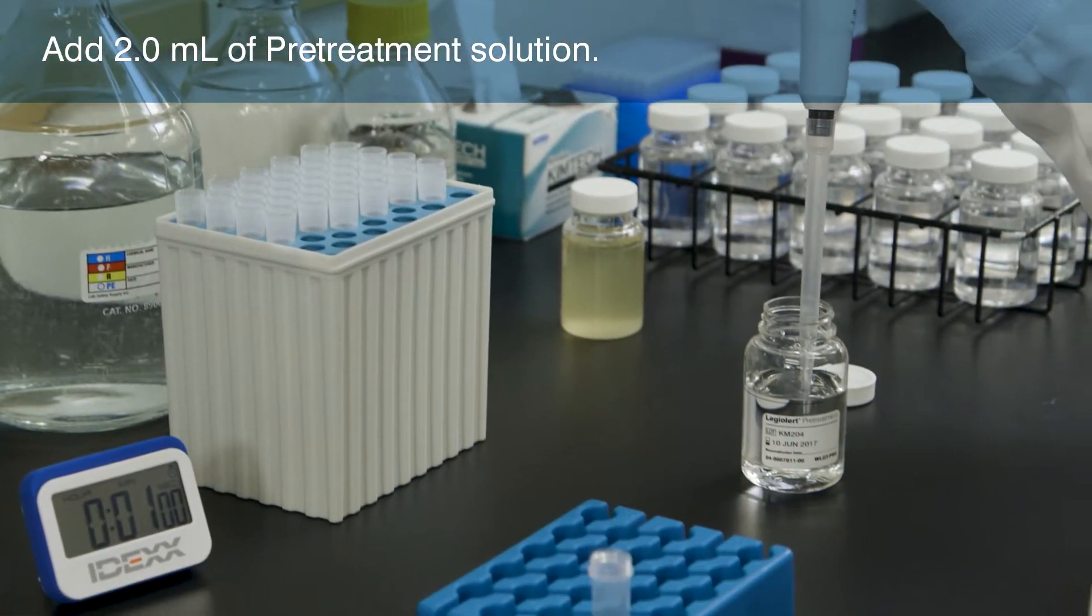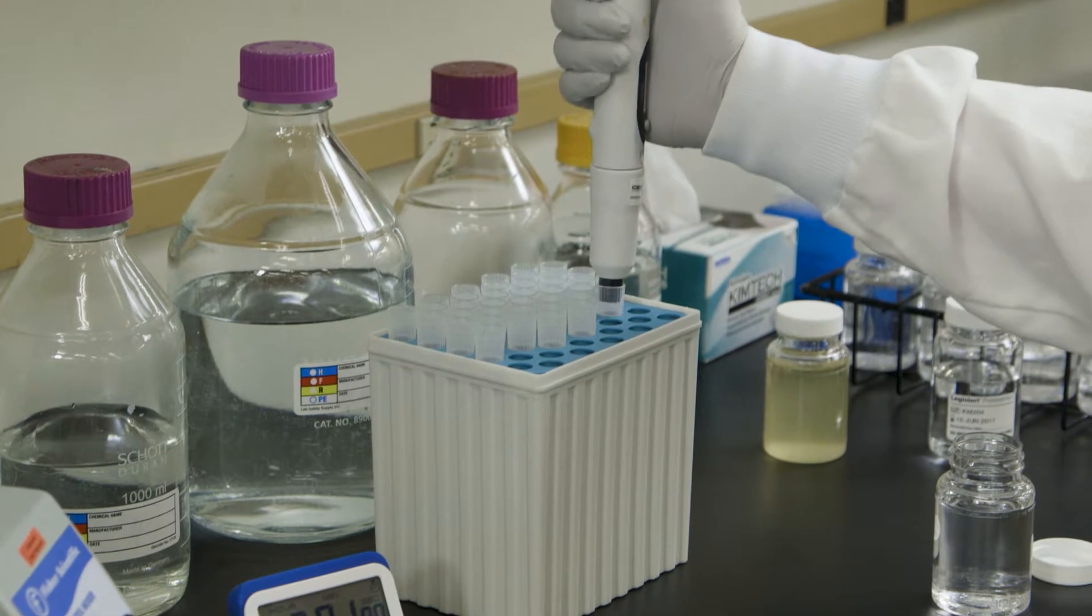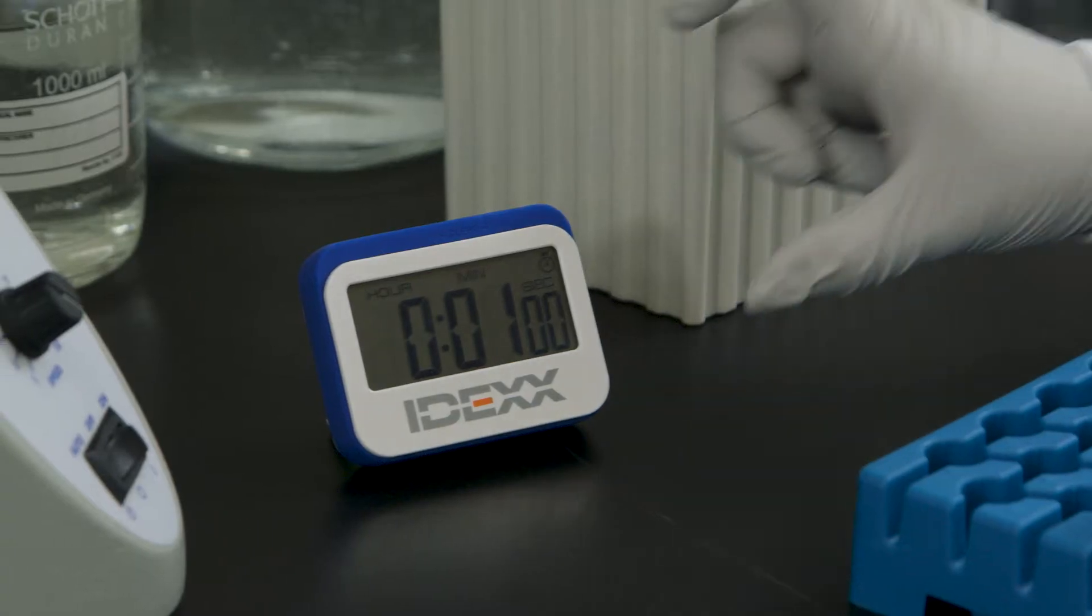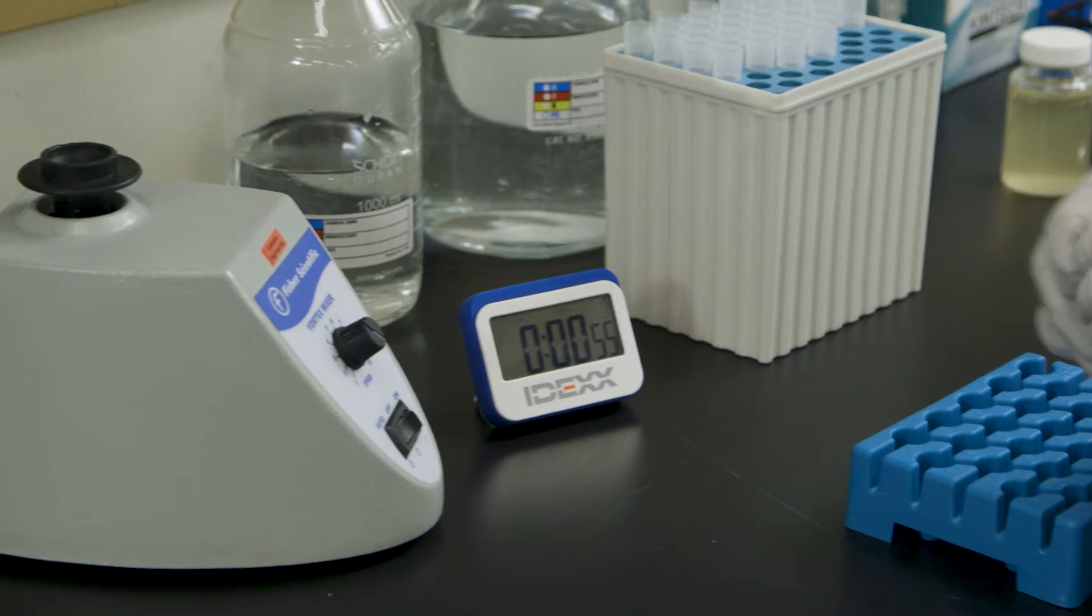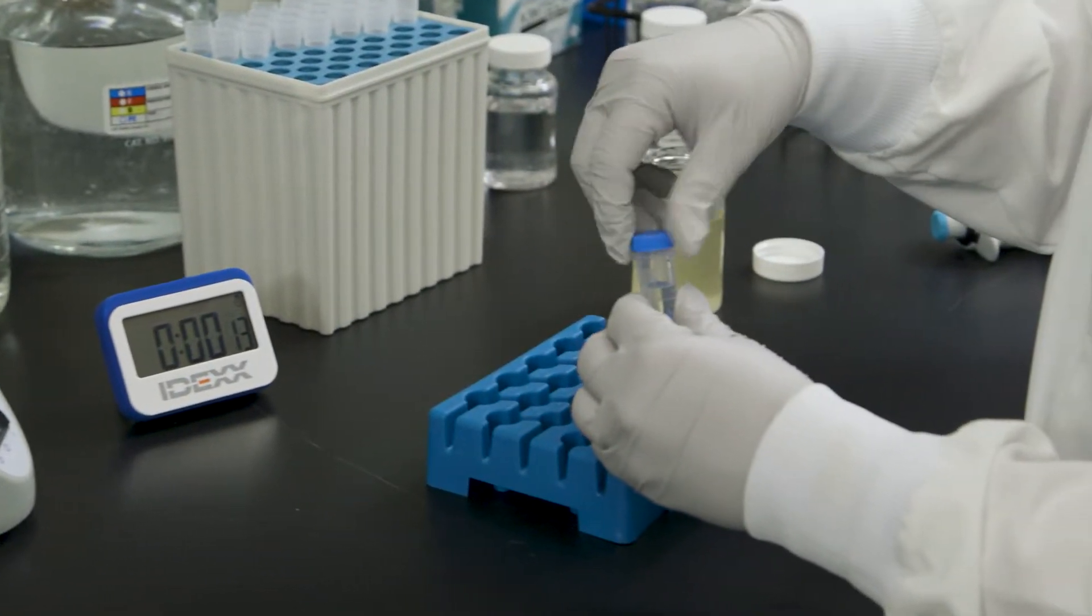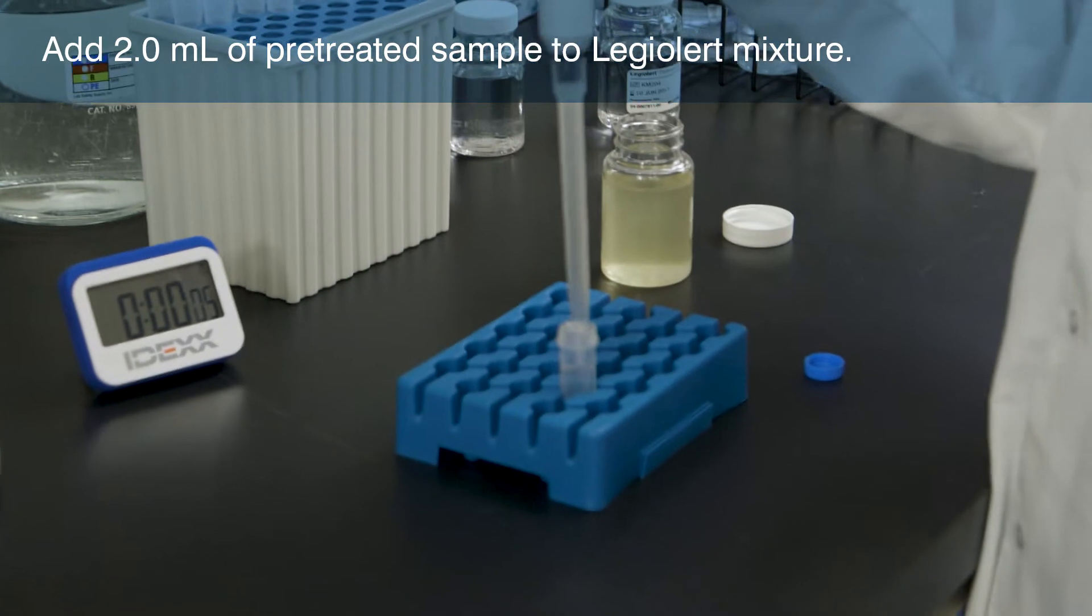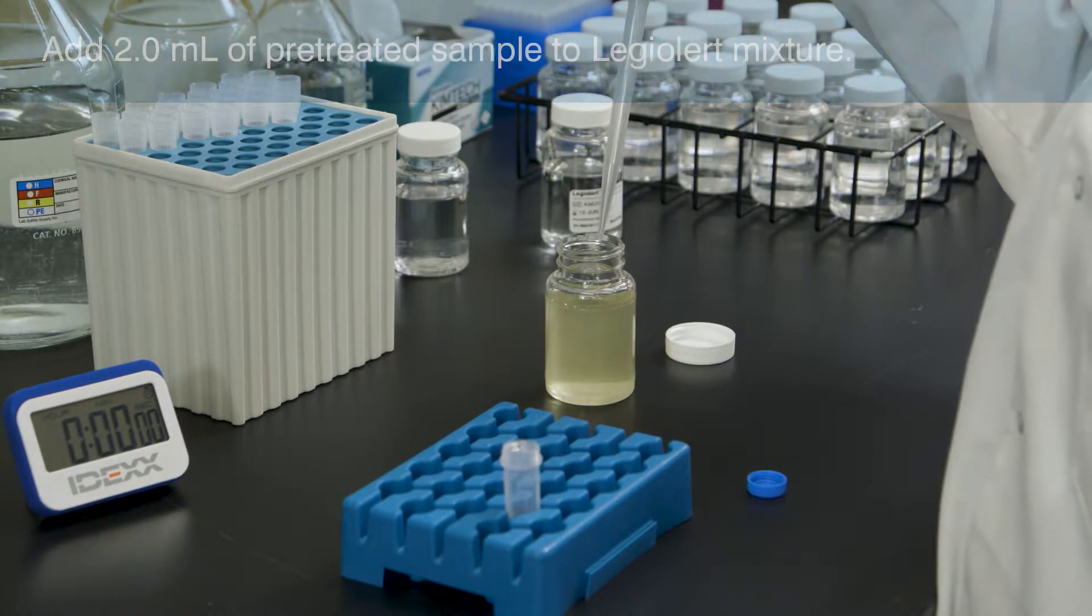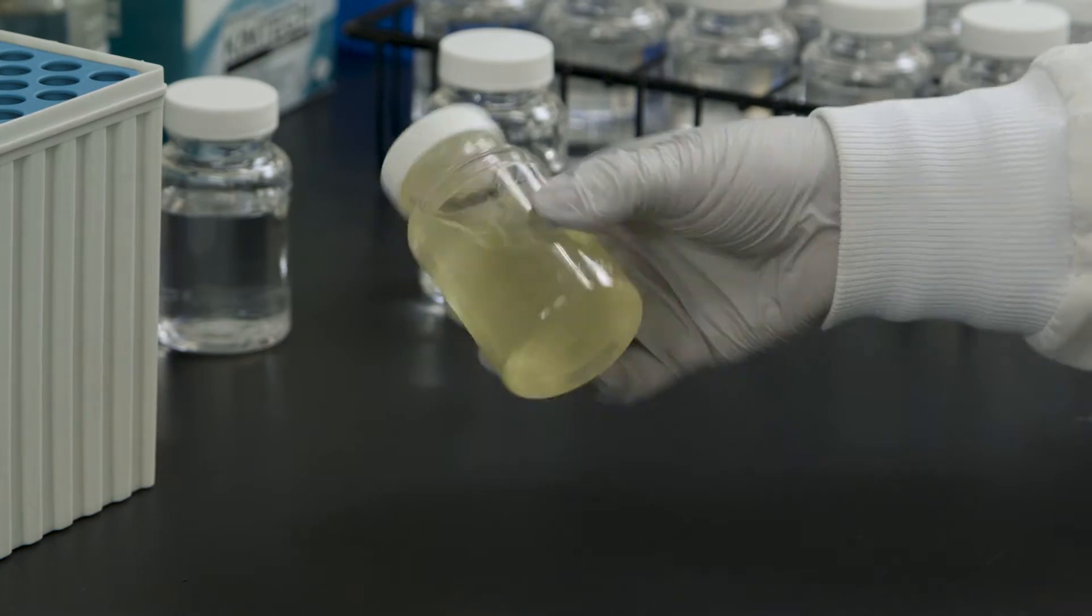Add 2 mL of reconstituted LEGALERT pretreatment to a sterile tube. Add 2 mL of non-potable water sample to the same tube. Start a 1-minute timer and then mix the contents thoroughly. Mix again before the 1 minute is up. At 1 minute, immediately transfer 2 mL of the treated sample to the vessel containing the dissolved LEGALERT reagent. Cap the vessel and invert to mix the sample with the reagent. This non-potable water sample is now ready to be quantified.